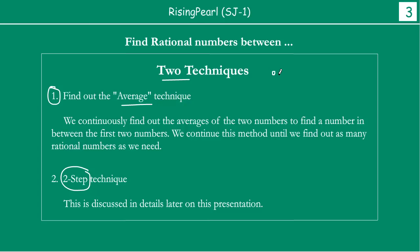If you take two numbers x and y and find their average, you add x plus y and divide that total by 2. The result z will be right in the middle of x and y.